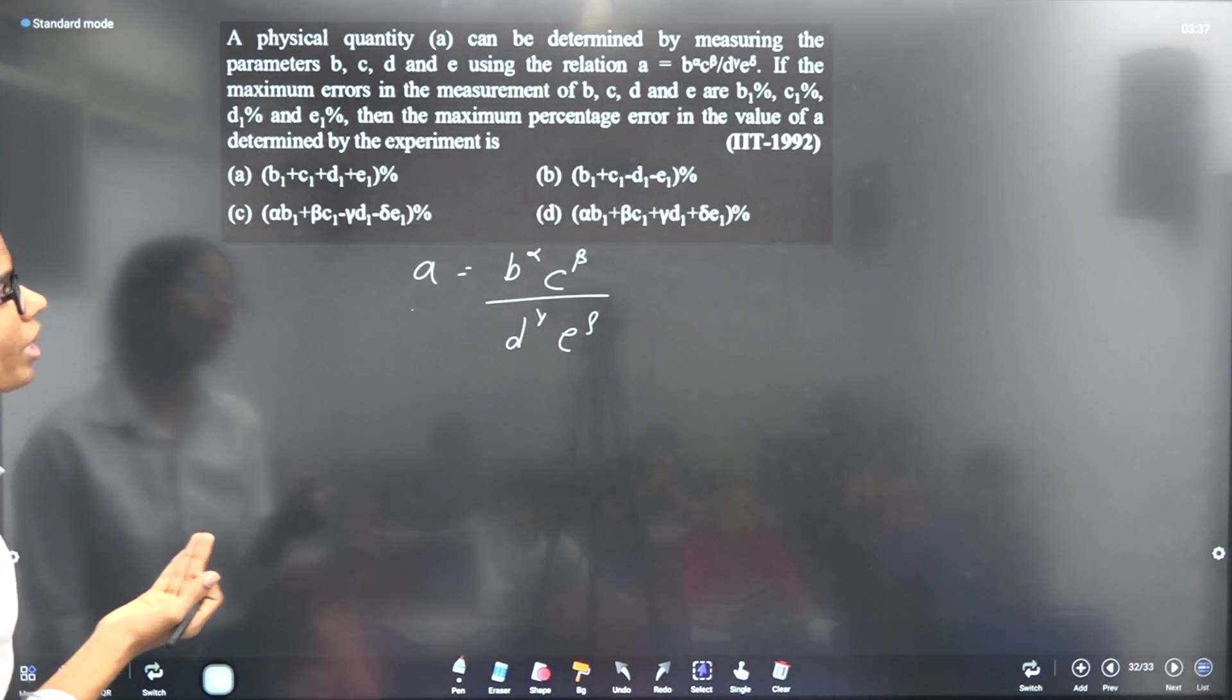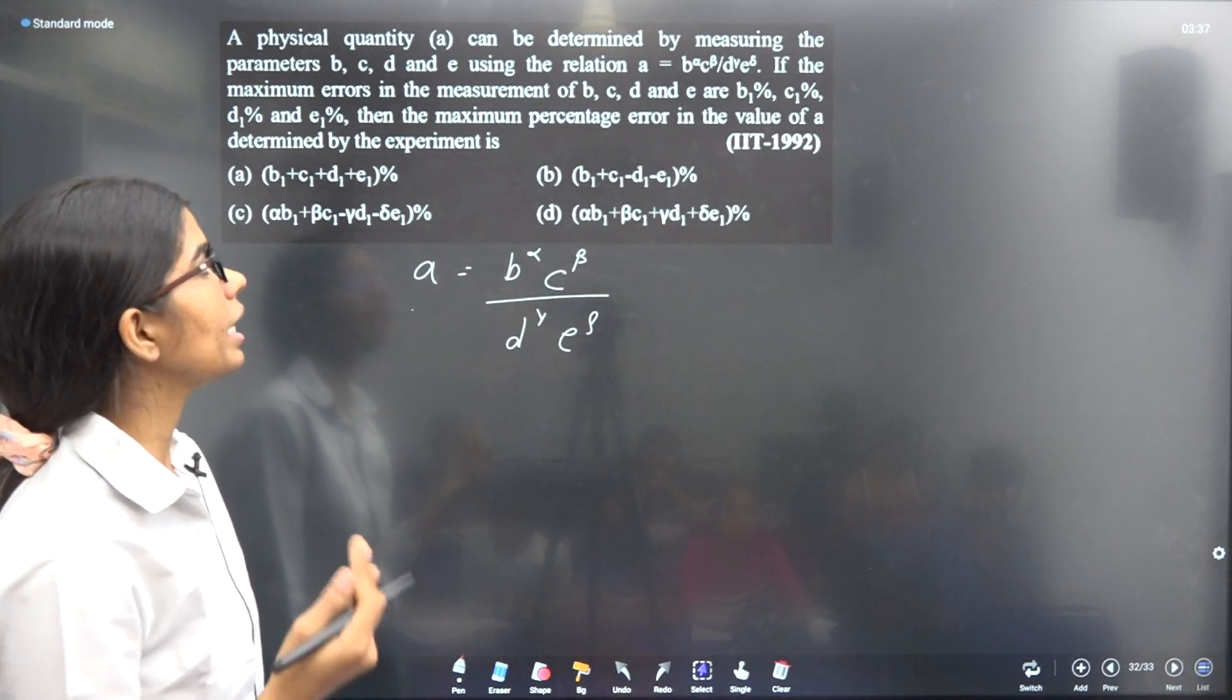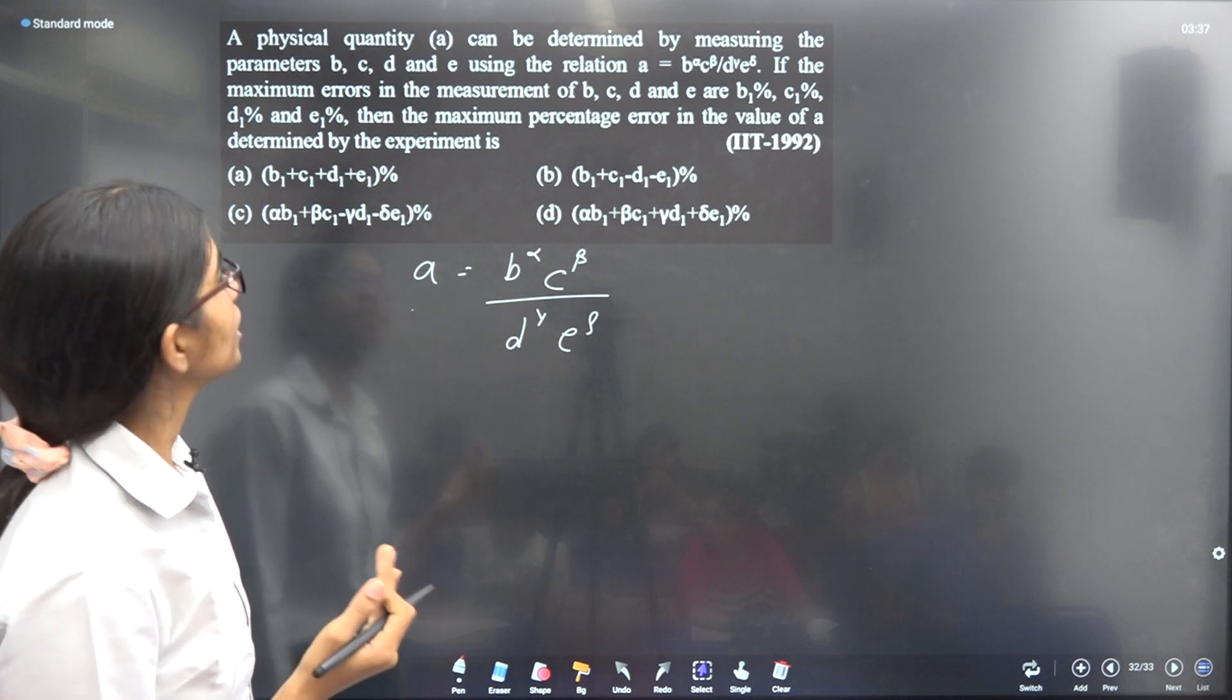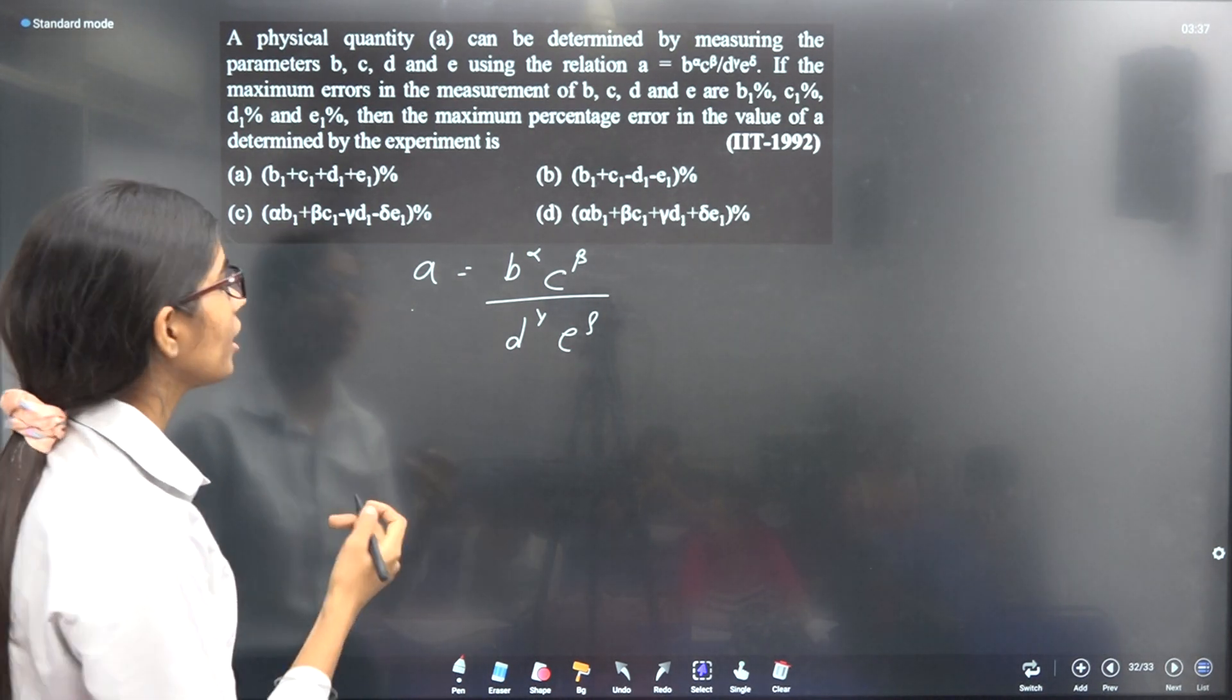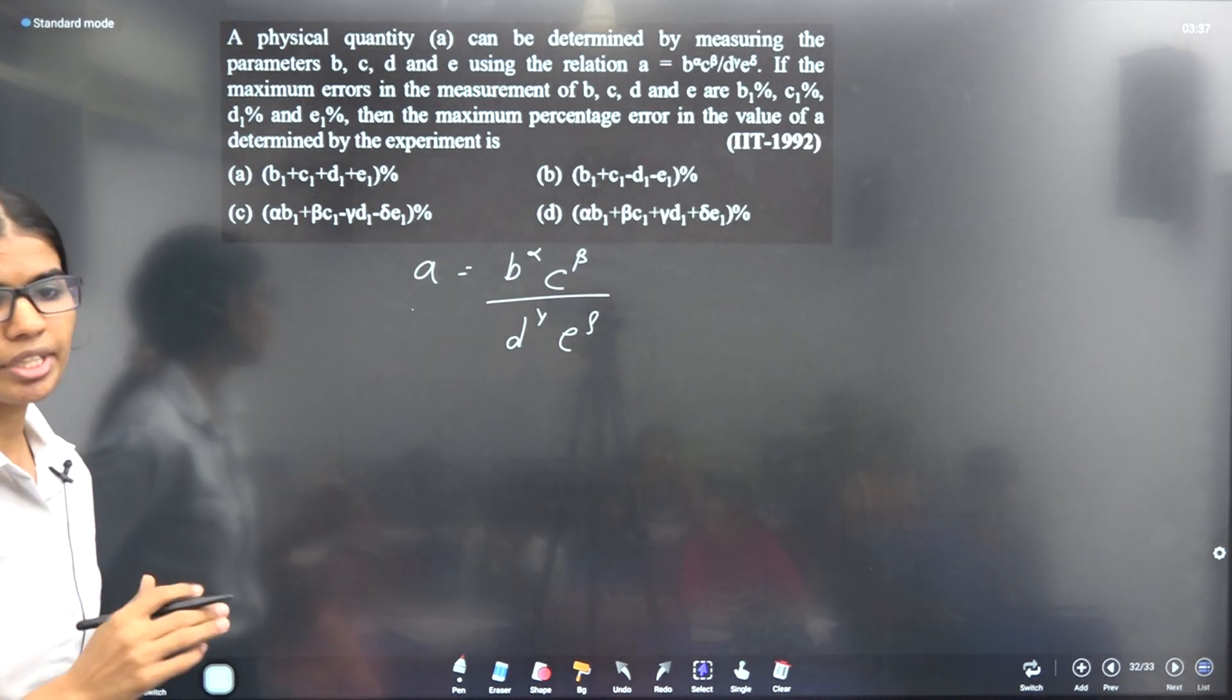If the maximum error in the measurement of B, C, D, and E are B1%, C1%, D1%, and E1%, find the maximum percentage error in A.